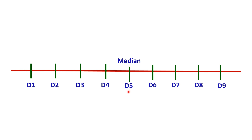This is how the deciles divide a series into ten equal parts. Similarly, the percentile divides a series into one hundred equal parts, so there must be ninety-nine percentiles. The fiftieth percentile will be equal to the median.